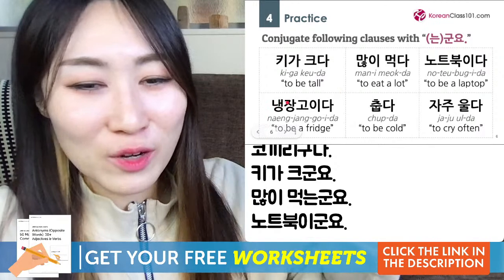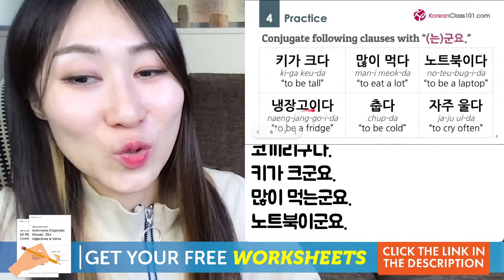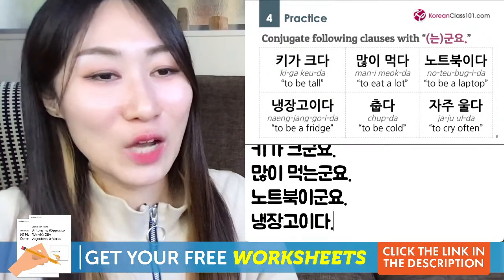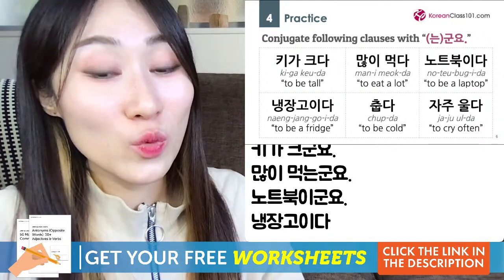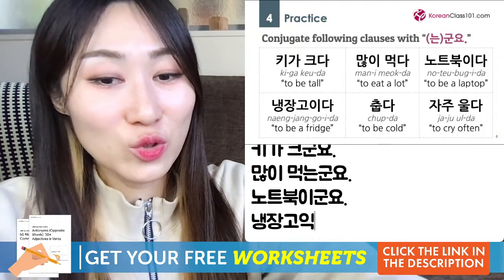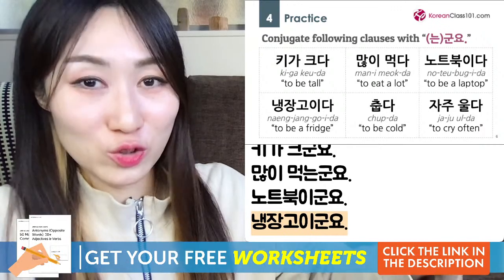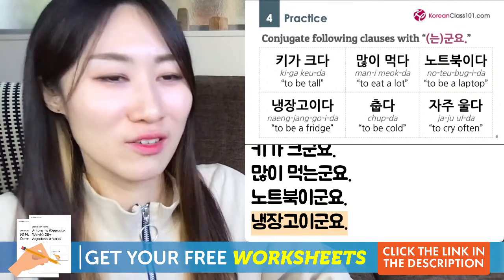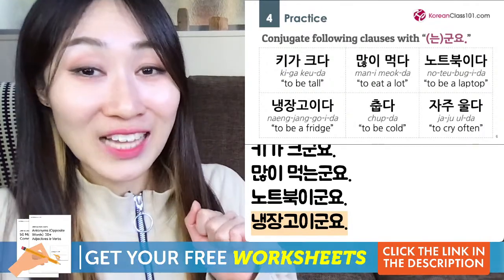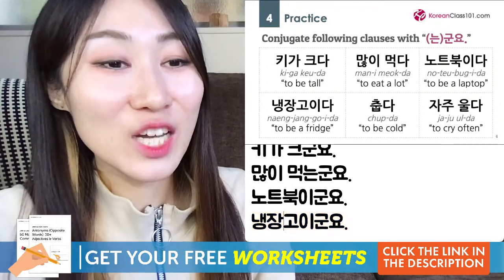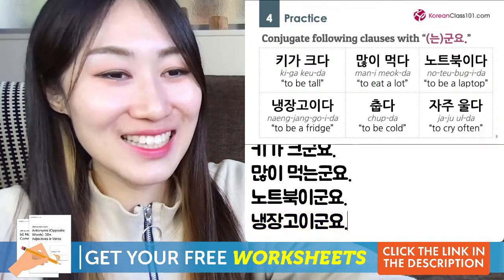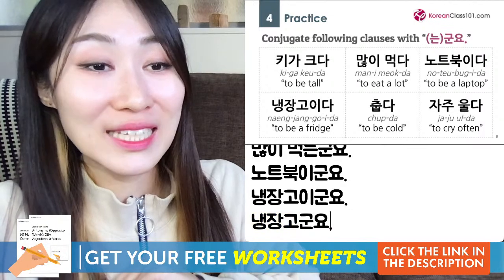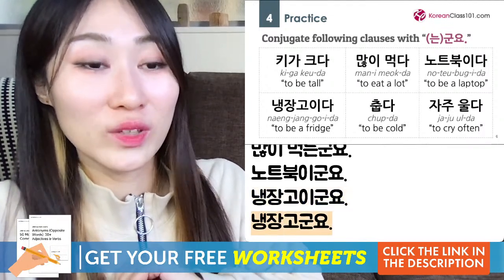냉장고이다 — 냉장고 means fridge. Conjugate with 군요: 냉장고이 plus 군요 gives 냉장고이군요. For example: you moved to a new house and I'm your parent giving you a big gift — something arrives: 냉장고이군요! 'Oh I see, it's a fridge!' Or since 냉장고 ends in a vowel (고), you can also just say 냉장고군요. Both 냉장고이군요 and 냉장고군요 are correct.